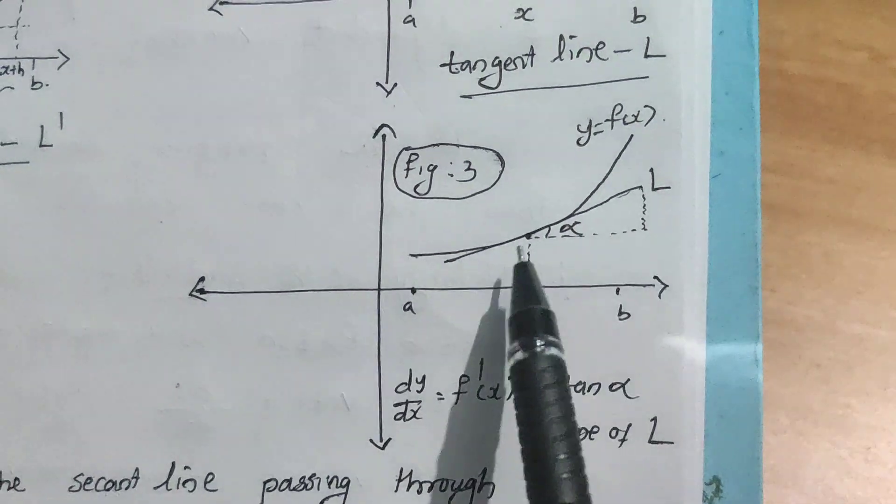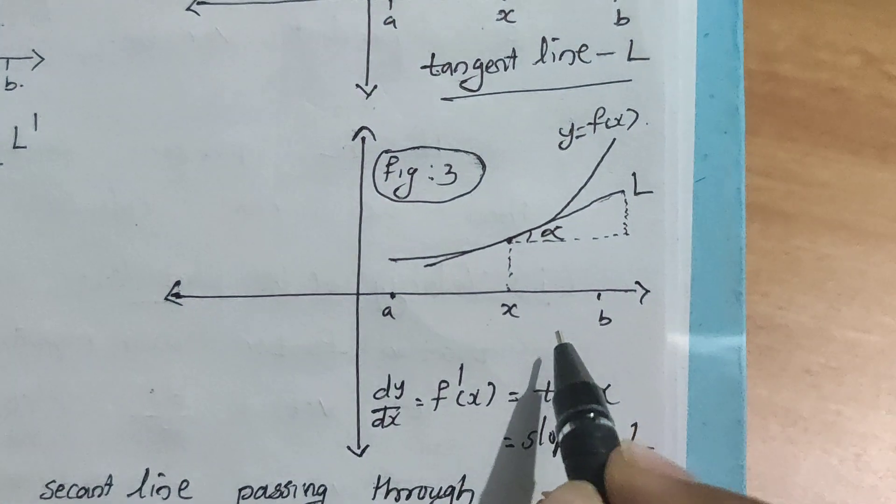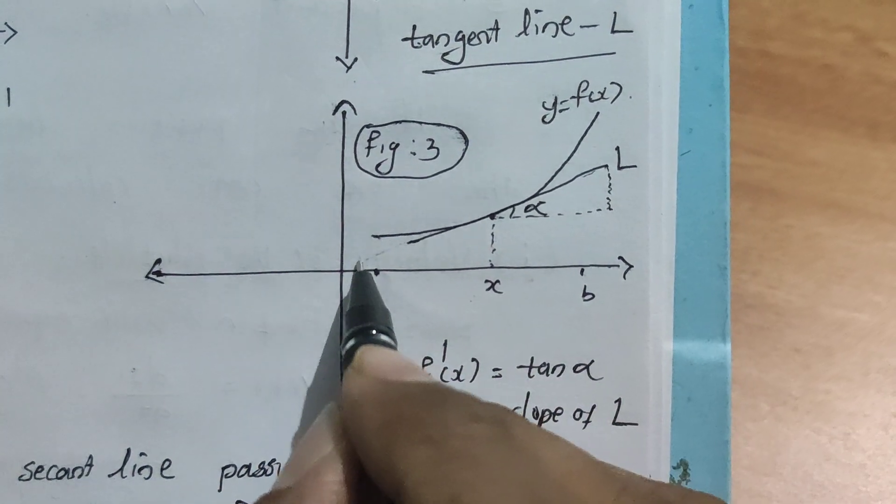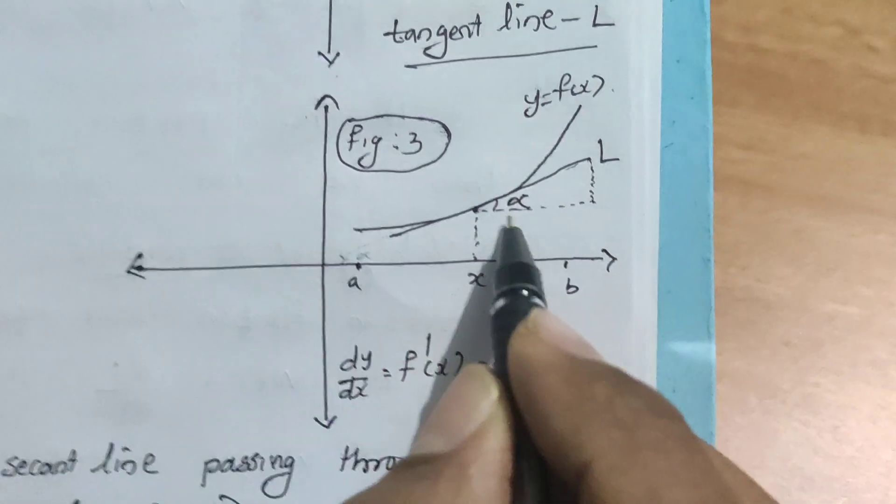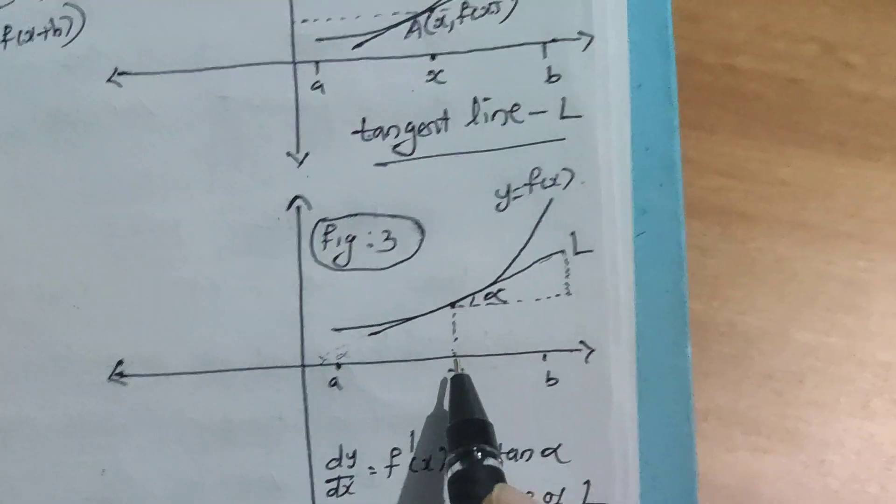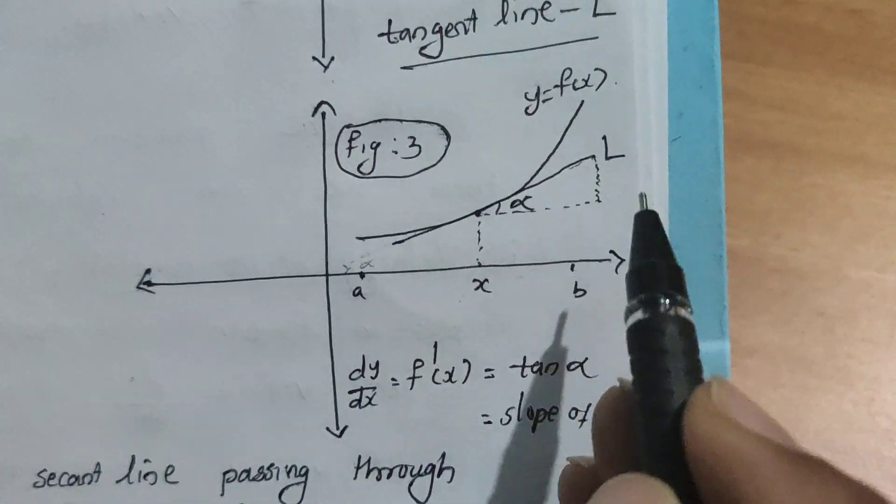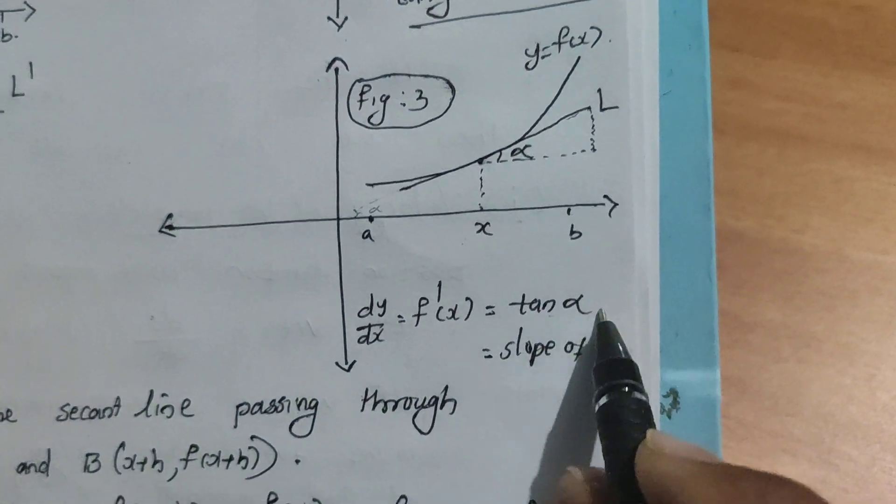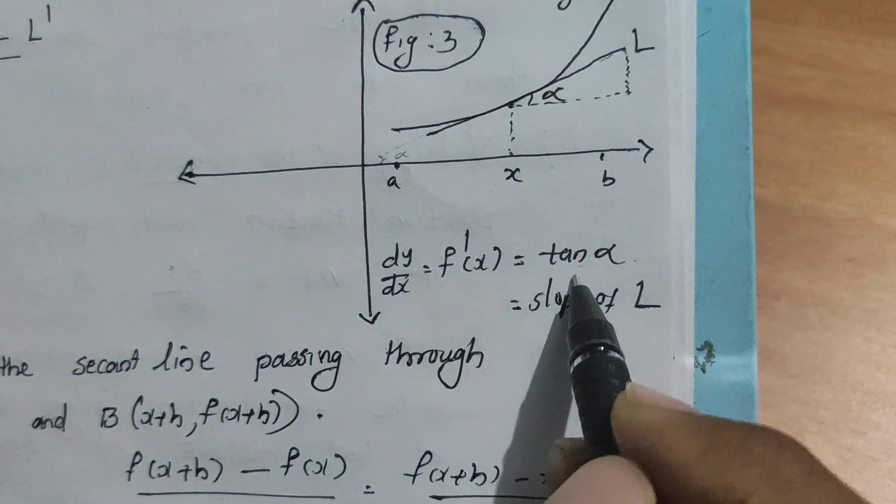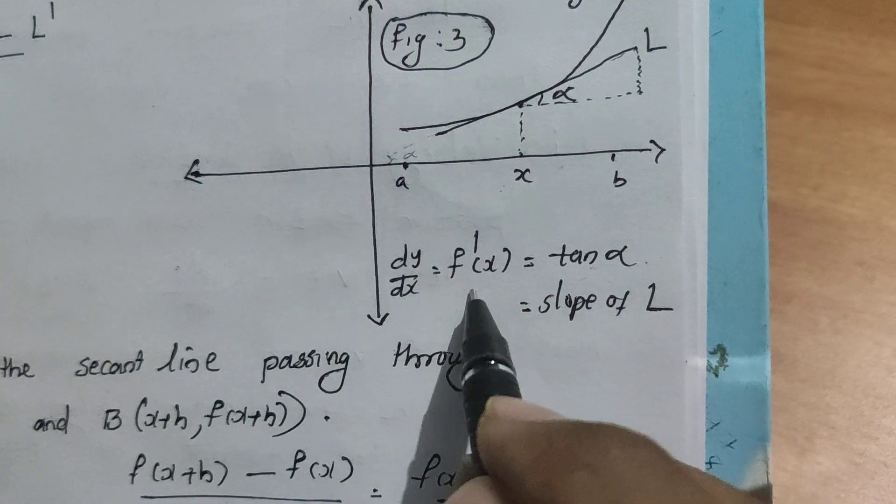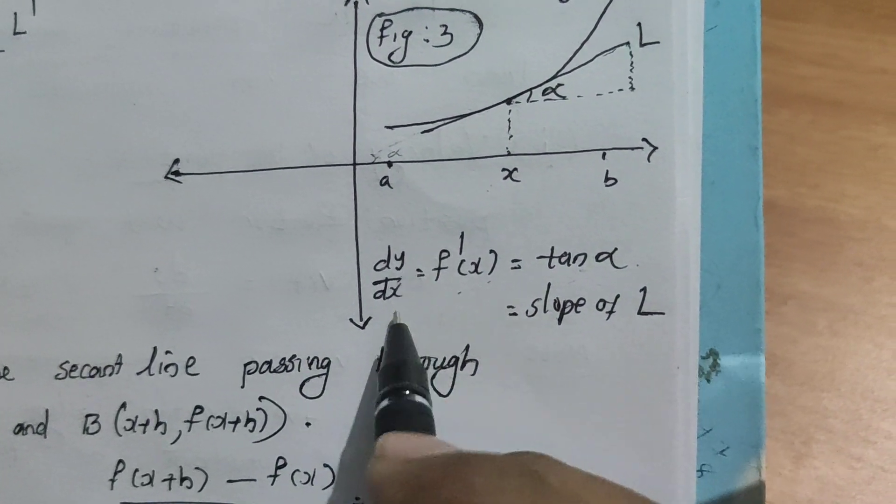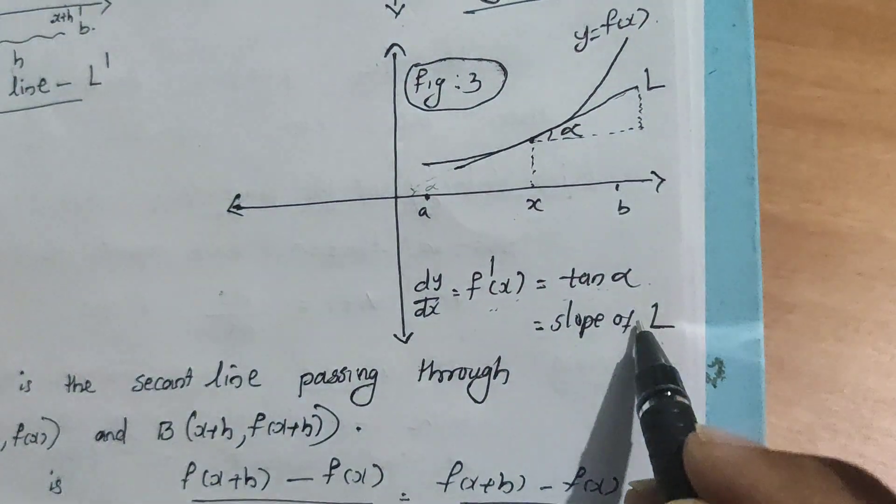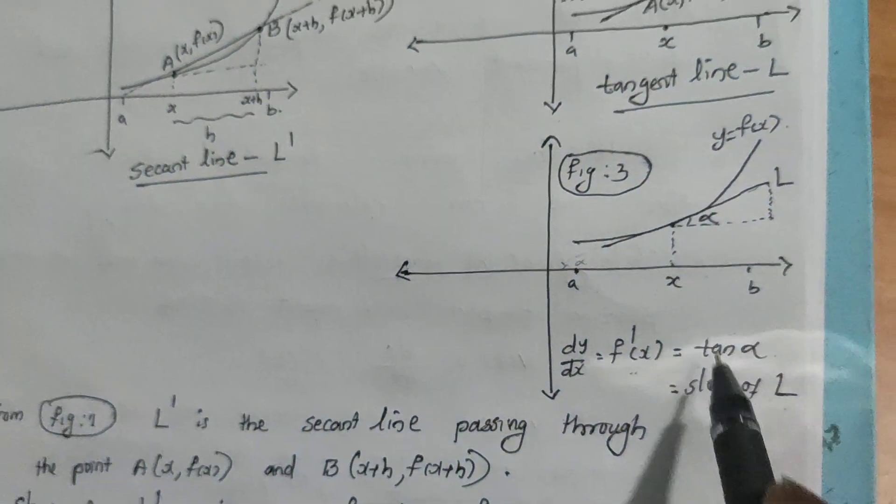The derivative of the function at x, that means dy/dx = f'(x) = tan(α), which means the slope of L.